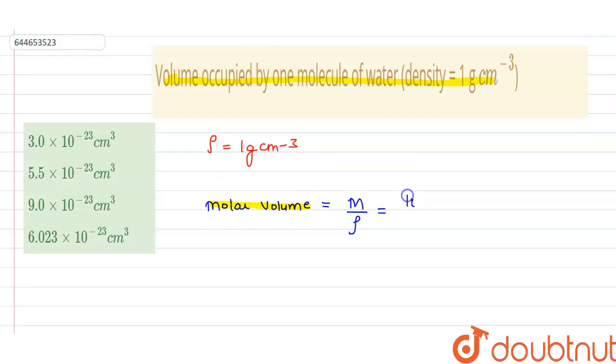We know that the molar mass of water is 18 gram per mole and density is given as 1 gram per centimeter cube. Now on solving it, we get 18 centimeter cube per mole. That is the volume contained by one mole of water.